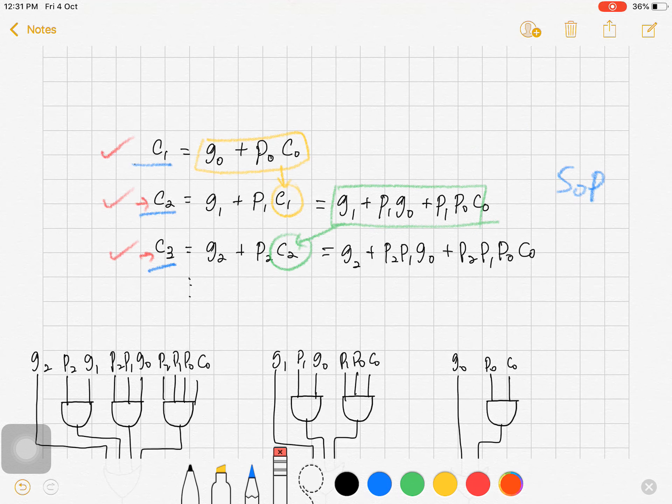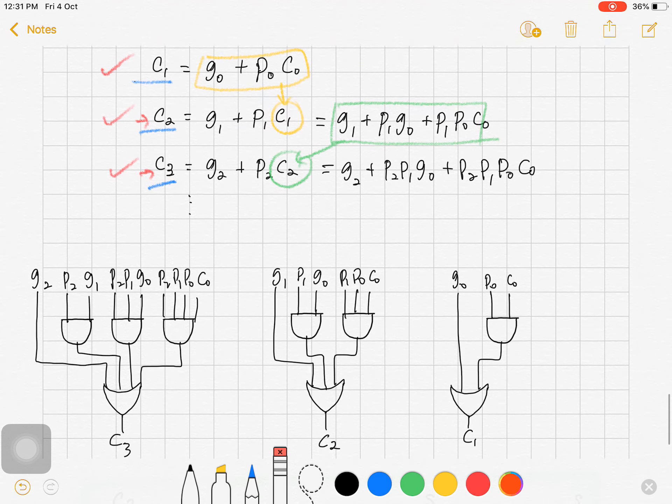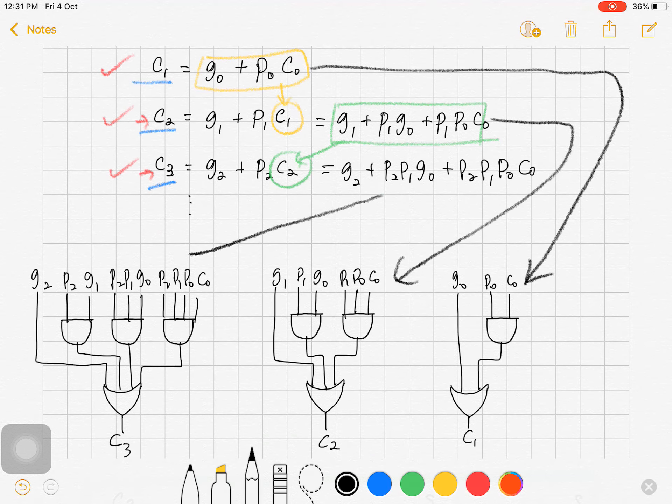So this two levels of logic circuit is obtained based on the sum of product form of C1, C2, and C3, such that from this expression we get this circuit, and then from here we get this, and finally from the last expression we get the circuit that produced C3.